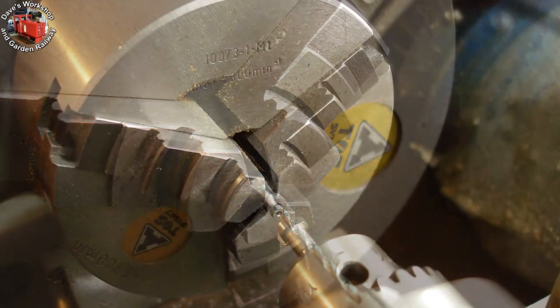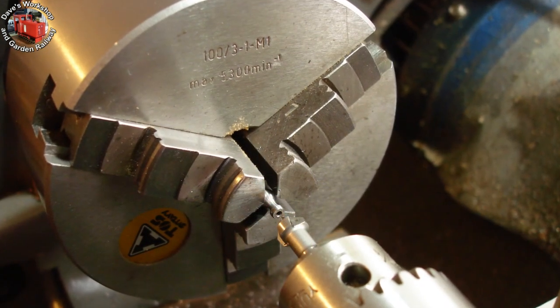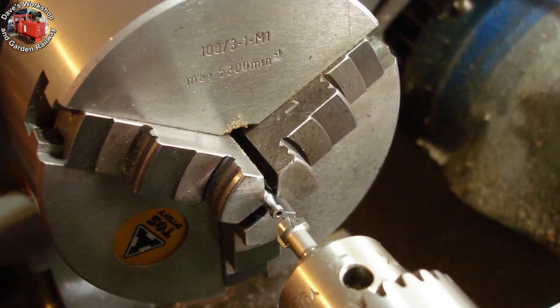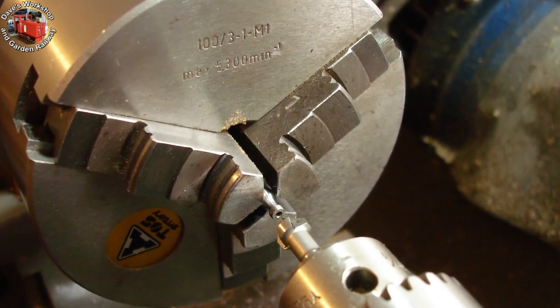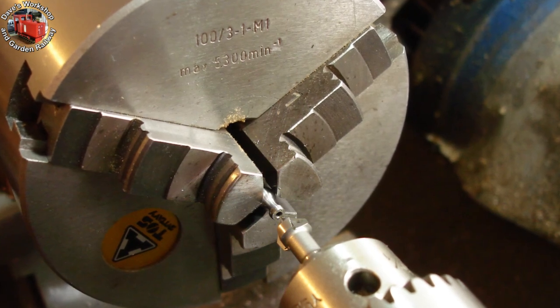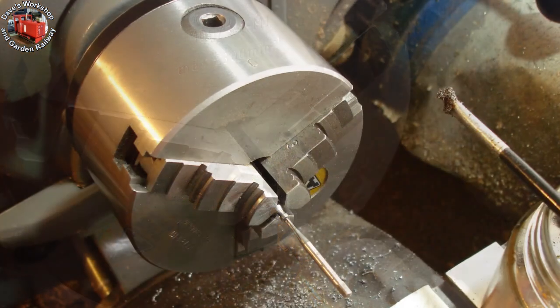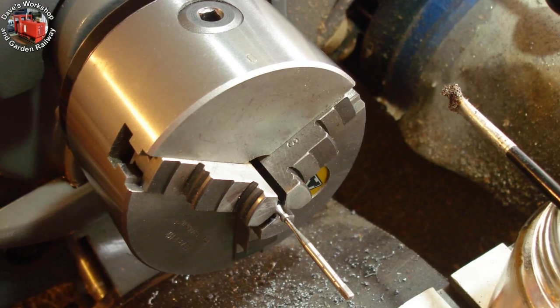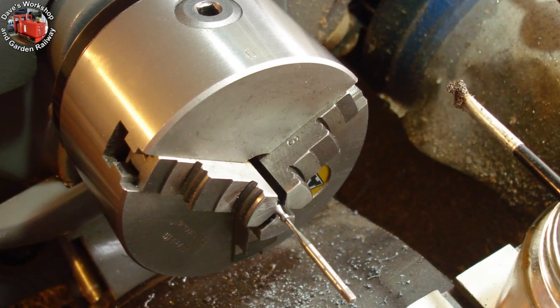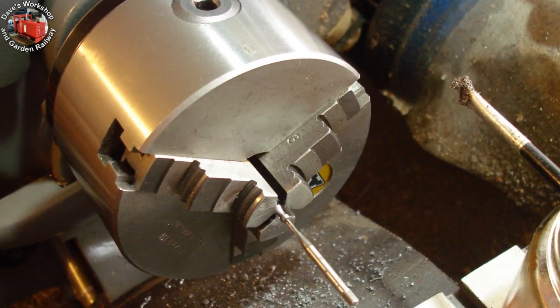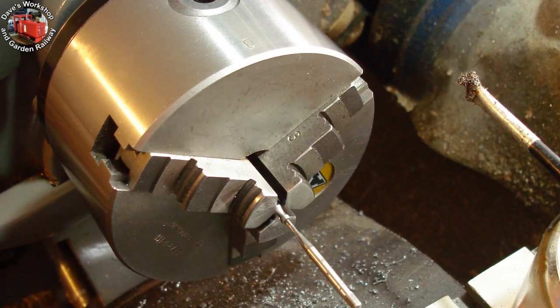So I sawed off the thread, smoothed the ends, then drilled, chamfered and tapped for 10BA. Luckily the waist was about half a mil larger than the thread. It was a real fiddle holding them in the three jaw and hardly ideal, but without any side force it worked out okay.